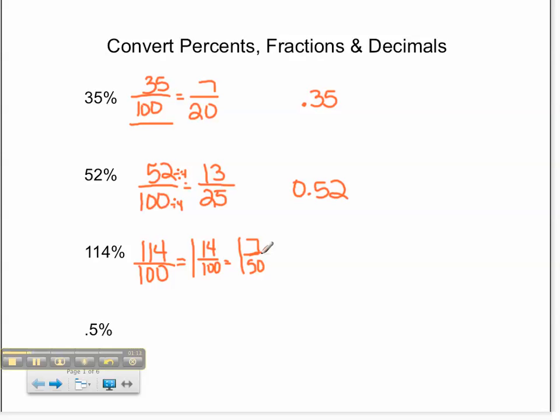1 and 7 fiftieths is equivalent to 114%. To write it as a decimal, I will refer back to my first mixed number of 1 and 14 hundredths.